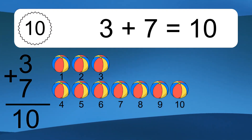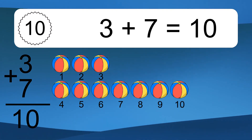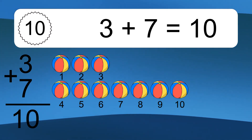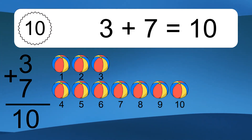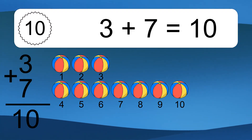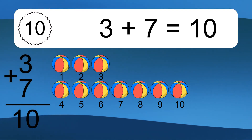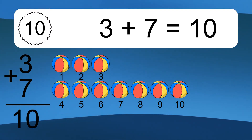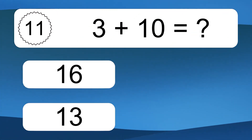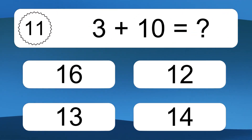3 plus 7 equals what? Let's count it. 1, 2, 3, 4, 5, 6, 7, 8, 9, 10.